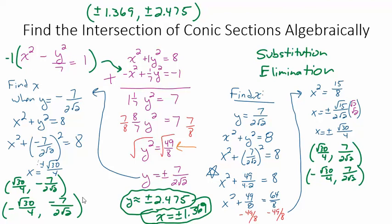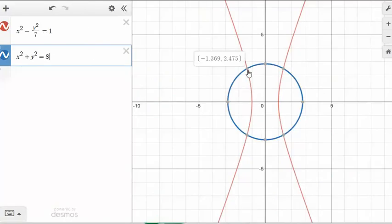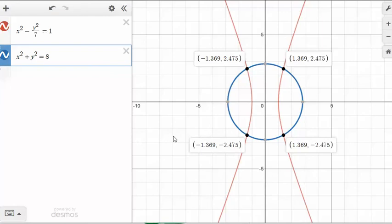Okay, let's go look at our graph. Can you remember these numbers? 1.36, 2.47. Here we go. 1.369, 2.475. There we go. There they are. The four points that we found algebraically.